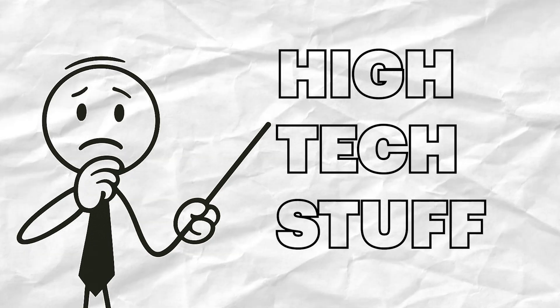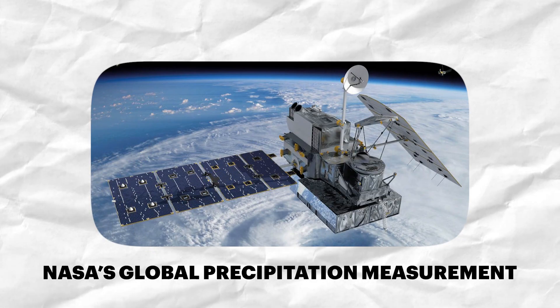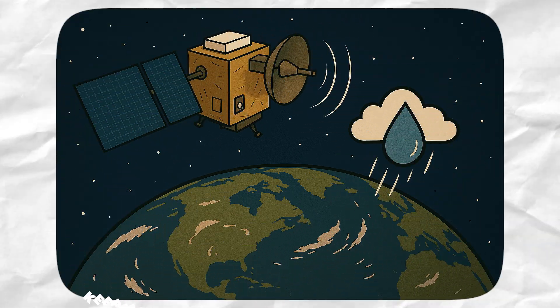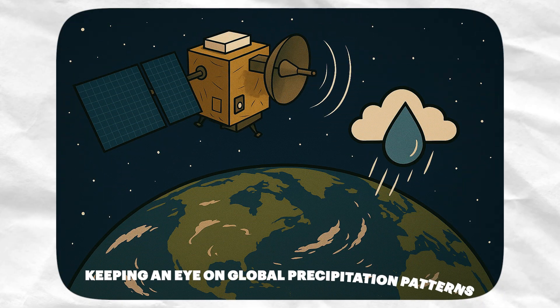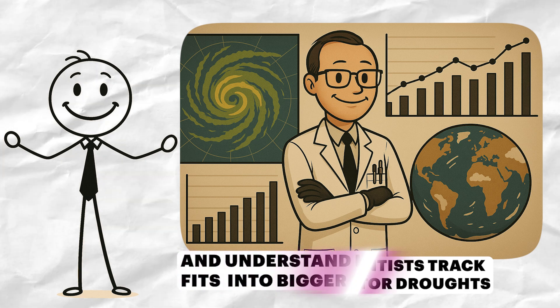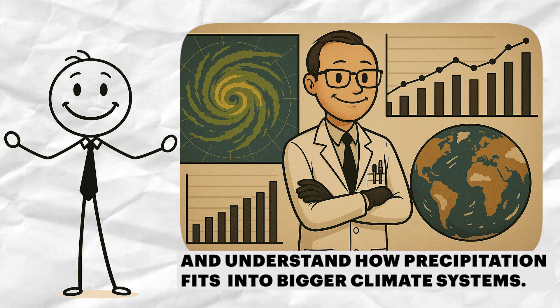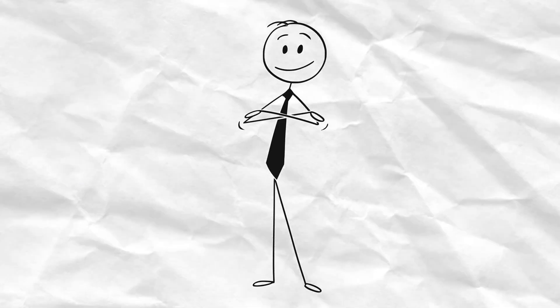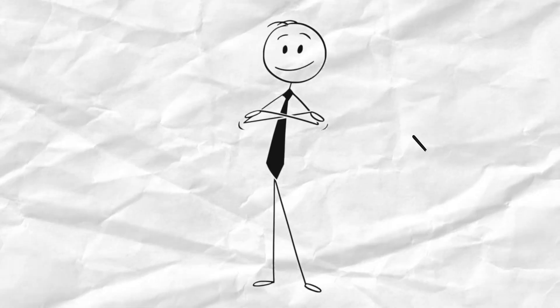And then there's the high-tech stuff. Satellites like NASA's Global Precipitation Measurement, GPM, orbit the planet, keeping an eye on global precipitation patterns. They help scientists track storms, monitor droughts, and understand how precipitation fits into bigger climate systems. Speaking of climate,